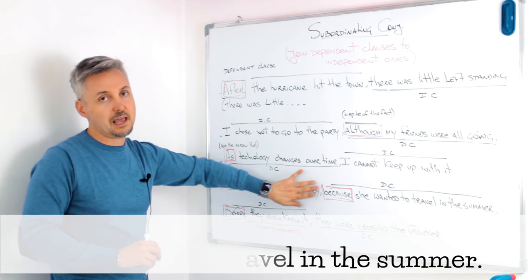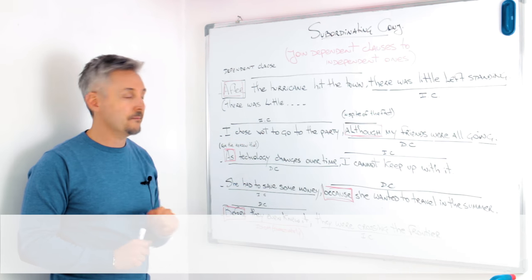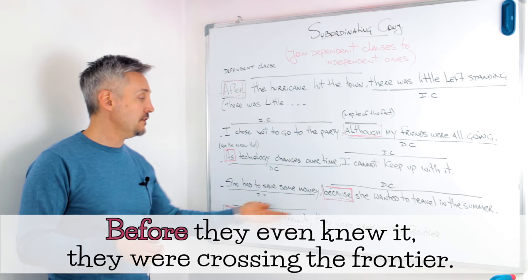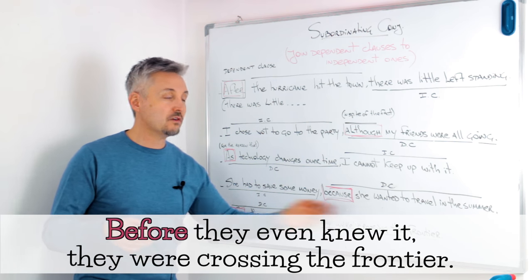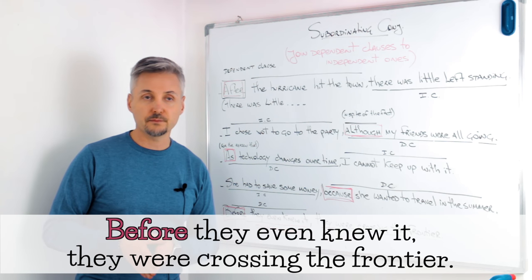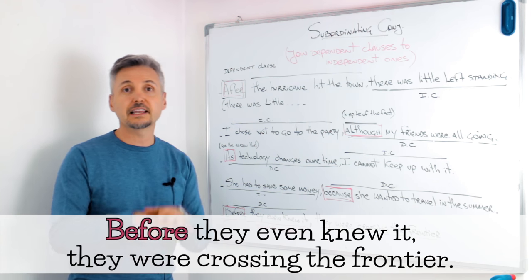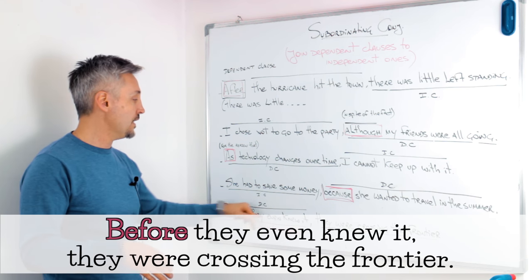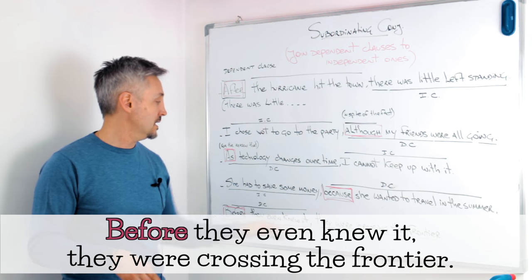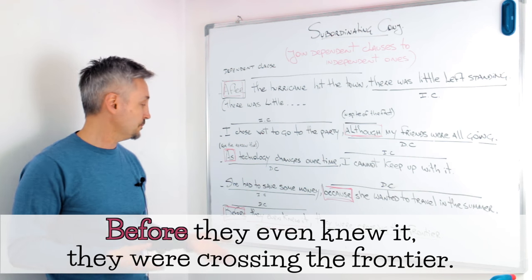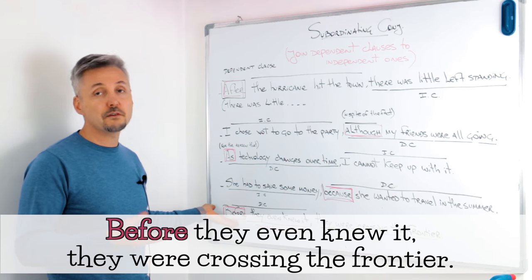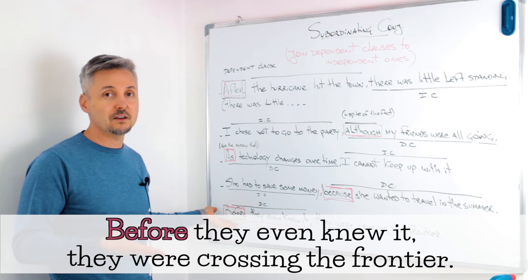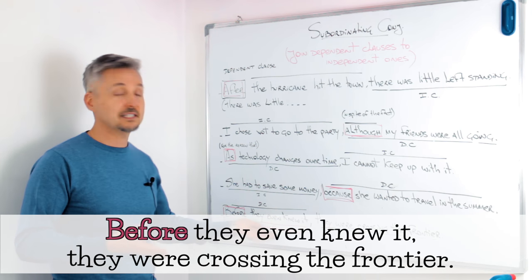The last example was: before they even knew it, they were crossing the frontier. 'They were crossing the frontier' is the independent clause, and 'before they even knew it' is the dependent clause. 'Before they even knew it' is also an idiom, and it means 'immediately.'